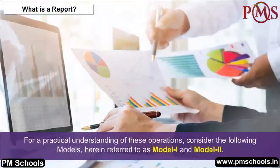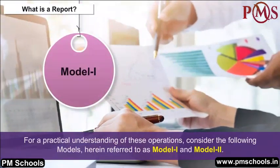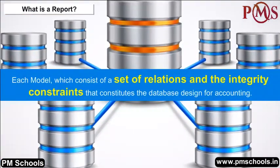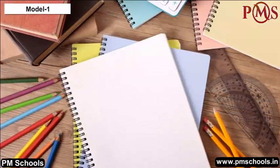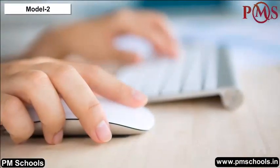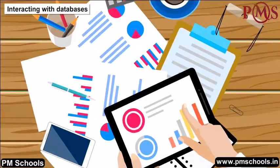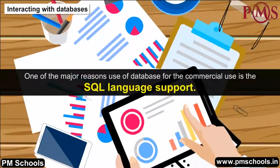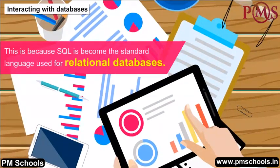For practical understanding, consider Model 1 and Model 2, each consisting of a set of relations and integrity constraints that constitute the database design for accounting. Model 1 and Model 2 each present a schema diagram for the accounting system relational database schema. One of the major reasons for commercial use of databases is SQL language support, as SQL has become the standard language used for relational databases.